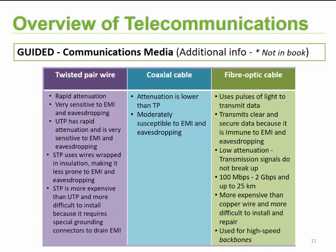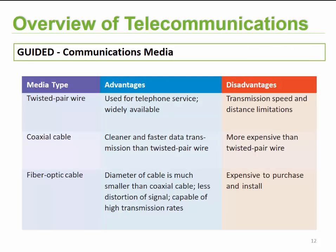To summarize the advantages and disadvantages: twisted pair was typically used for telephone services and is widely available, but speed and distance are its main limitations. Coaxial cables are faster and provide cleaner data transmission but are more expensive. For fiber optics, the smaller diameter requires less space, there is less distortion, and data rates are very high; however the major disadvantage is that it is very expensive and mistakes are very difficult to fix.